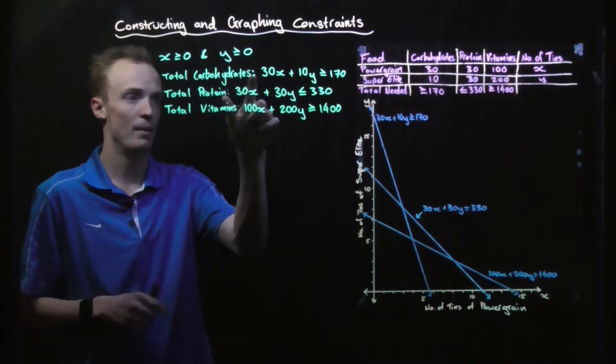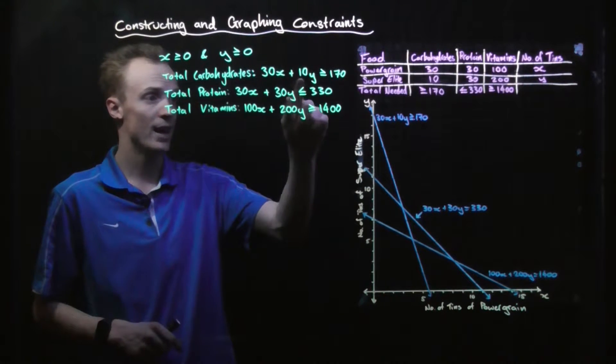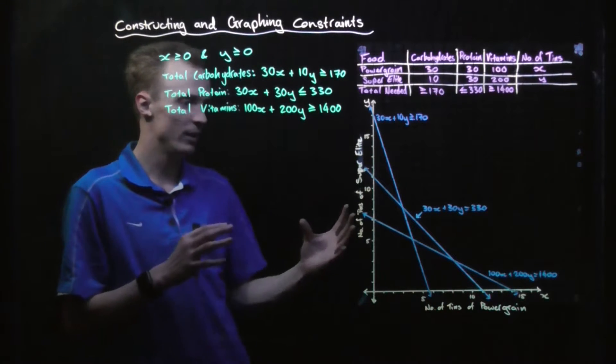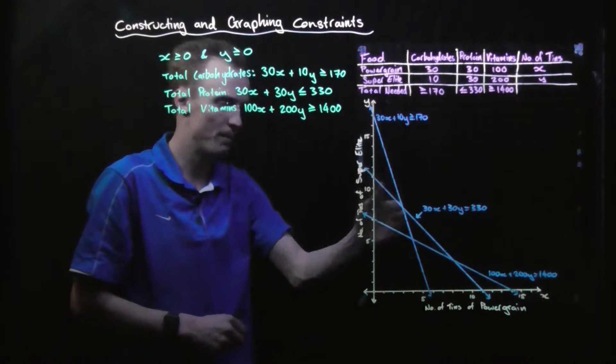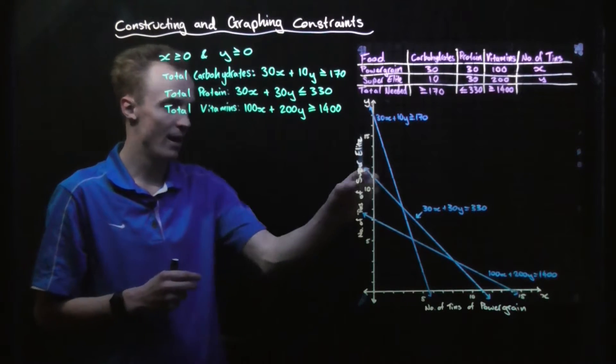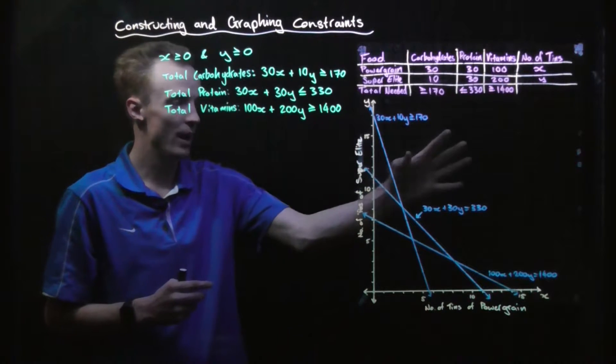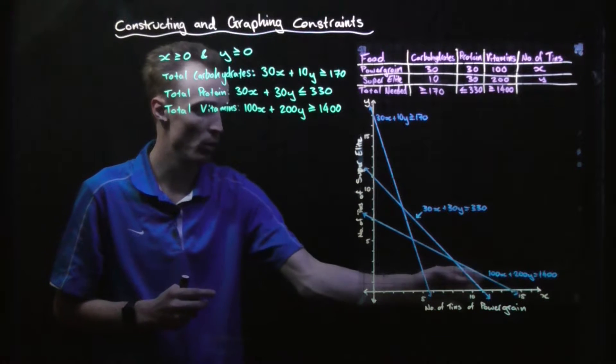Then we look at total carbohydrates which is represented by that line there. In this case we're saying it's greater than 170, so the feasible region must lie on this side of that boundary line. So it can't be in these three regions here but it could be in this region, this region, this one, or this one.